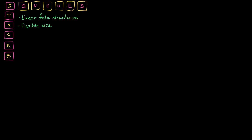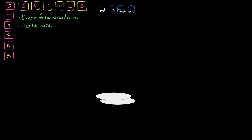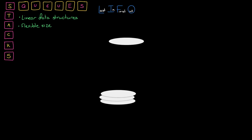The main difference comes in how elements are removed from the stack or from the queue. A stack is what would be called a LIFO data structure — last in, first out. It's much like an actual stack of plates. The last plate you put on top of that stack, that's going to be the first one you remove. It's LIFO, last in, first out.